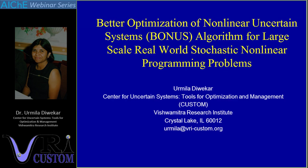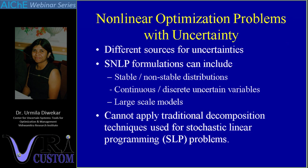I am going to concentrate on uncertainties and optimization under uncertainty, and especially because we are engineers and we deal with nonlinear problems. If we consider nonlinear optimization problems with uncertainty, they are difficult because uncertainties come from various sources — you may not have just one parameter uncertainty. You can have various distributions for different parametric uncertainties, which could be stable or non-stable distributions. Sometimes you also have discrete variables along with continuous variables, making it a mixed integer problem. Generally when dealing with engineering problems, they are large-scale problems.